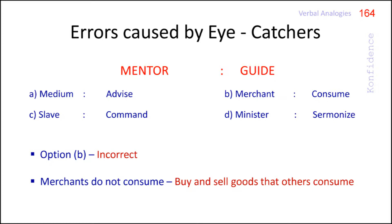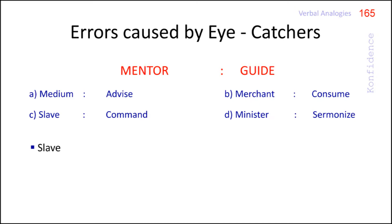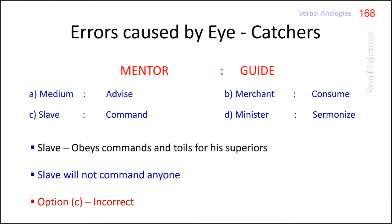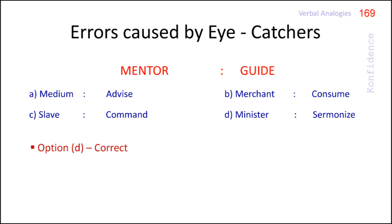Now take option C Slave. Slave is a person who obeys commands and toils for his superiors. He does not by definition command anyone. So option C is also wrong. By safely eliminating the wrong choices we reach the right answer. That is option D. Minister is a Christian priest and he sermonizes or preaches on morality. Thus just like a mentor guides a minister sermonizes.